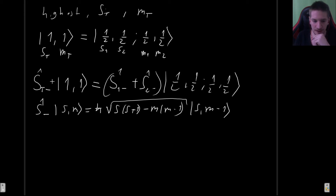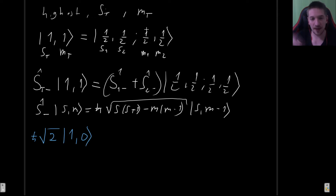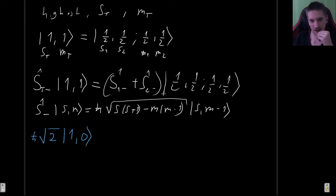Let's apply this. For the total operator: s is one, m is one, so we get ℏ times the square root of 1(2) minus 1(0) = square root of 2. This gives us square root of 2 times ℏ times |1, 0⟩. That's why we chose the lowering operator — we could also have started from the state |1, -1⟩ and worked our way up, but this direction is less confusing.